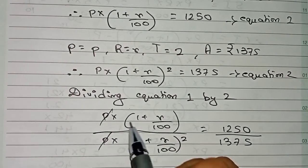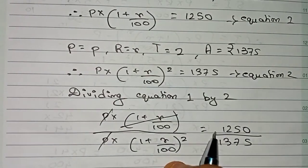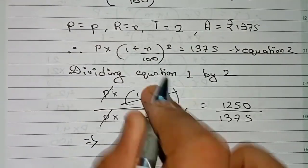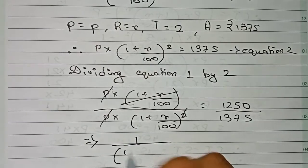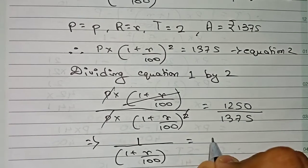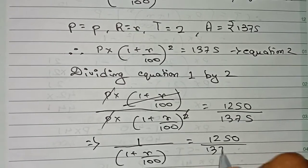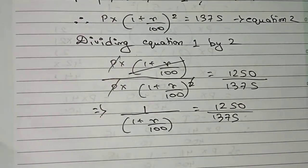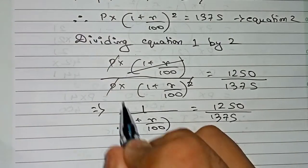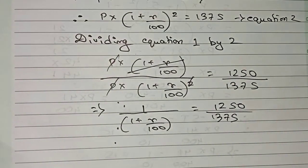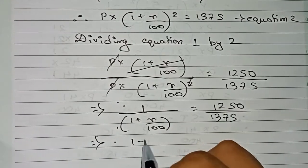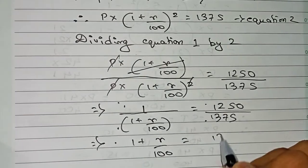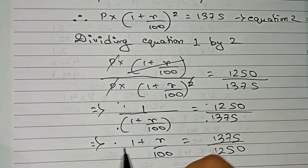After canceling principal, the (1 + R/100) terms can also be simplified. Since there is power 2 in the denominator and power 1 in the numerator, one (1 + R/100) cancels, leaving 1 over (1 + R/100) equals 1250 by 1375. Taking the reciprocal of both sides gives: (1 + R/100) equals 1375 by 1250.